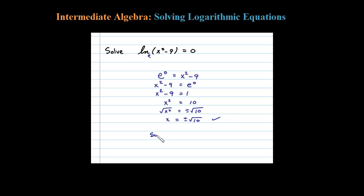The solution set consists of two numbers: negative square root of 10 and square root of 10. Both are good.